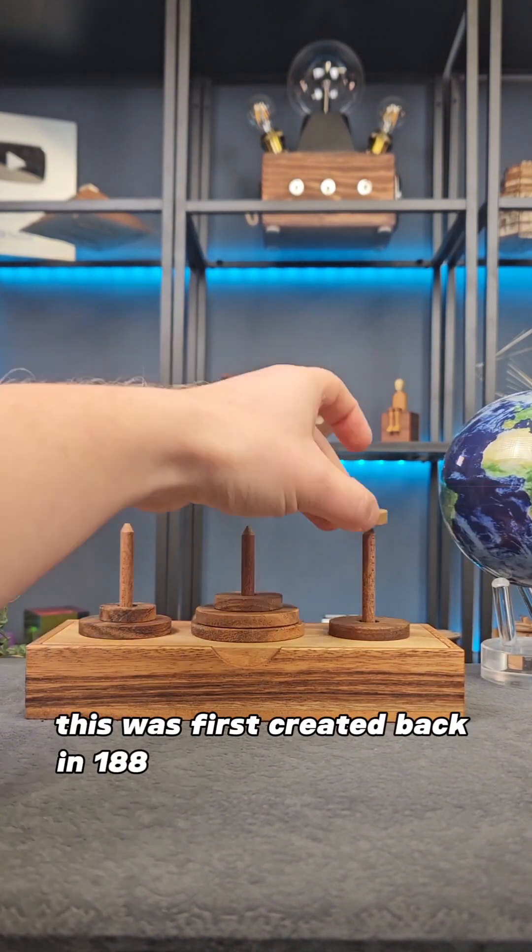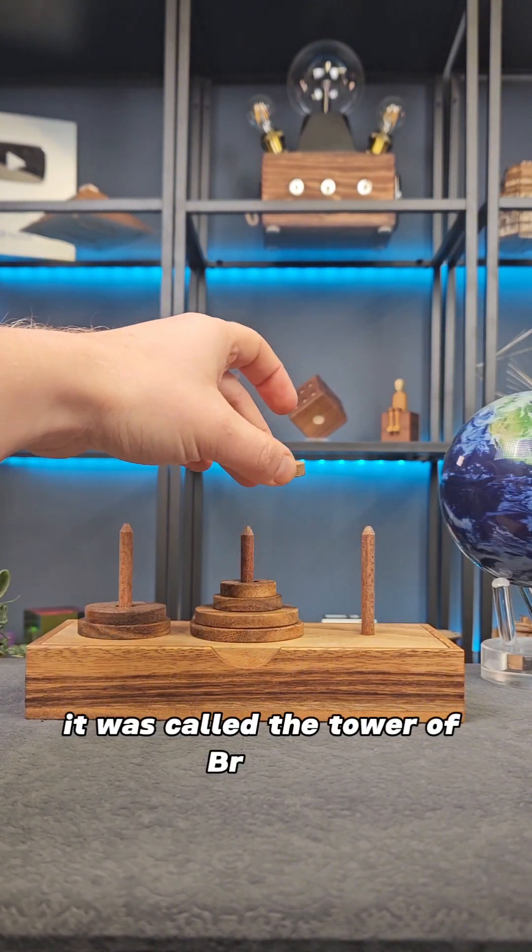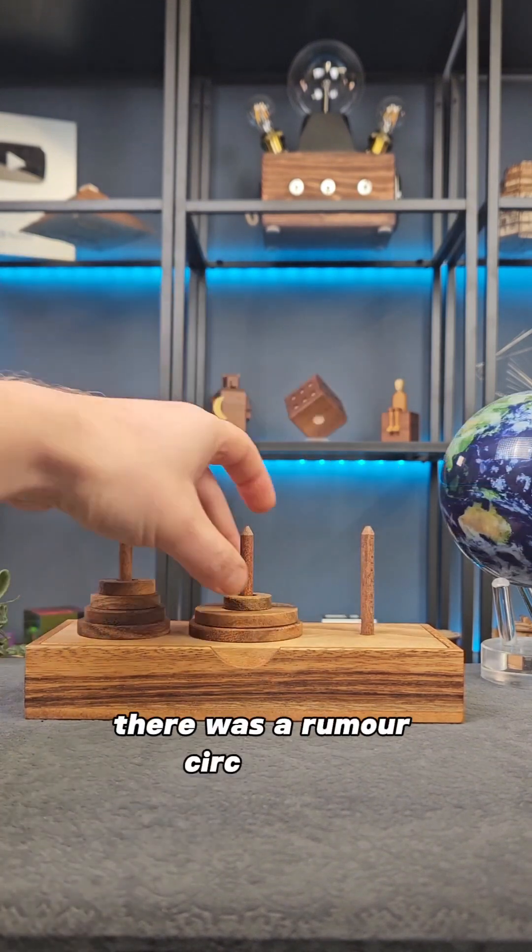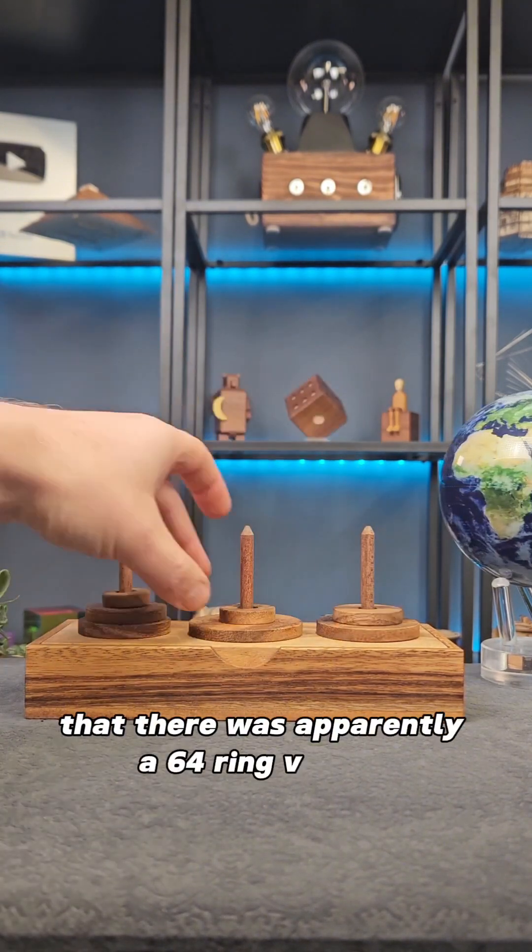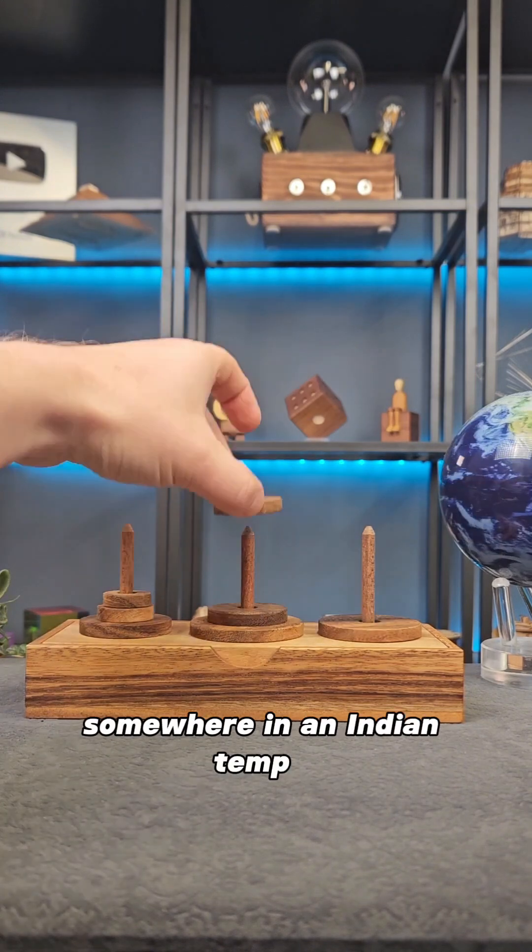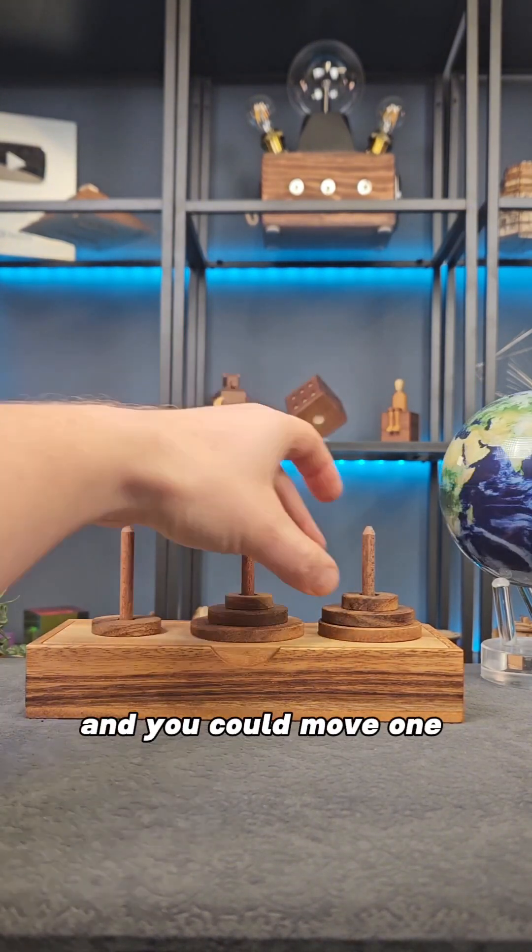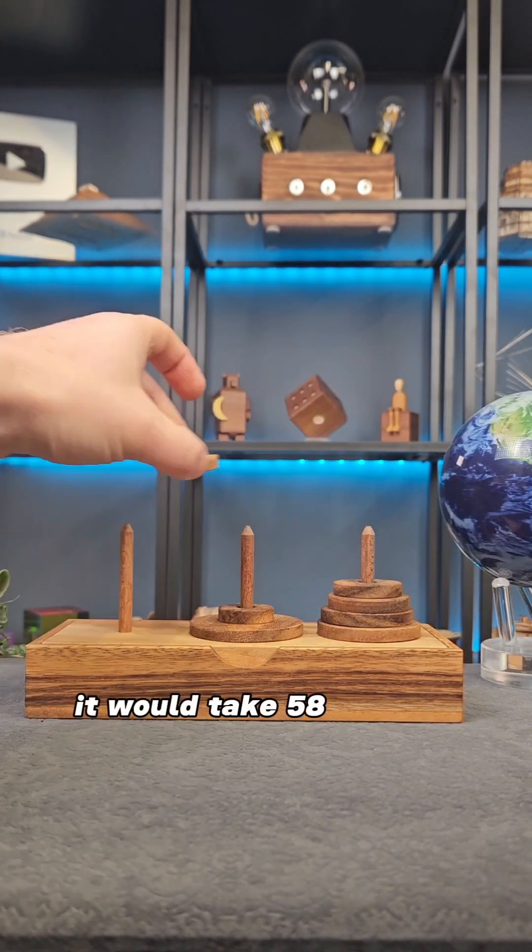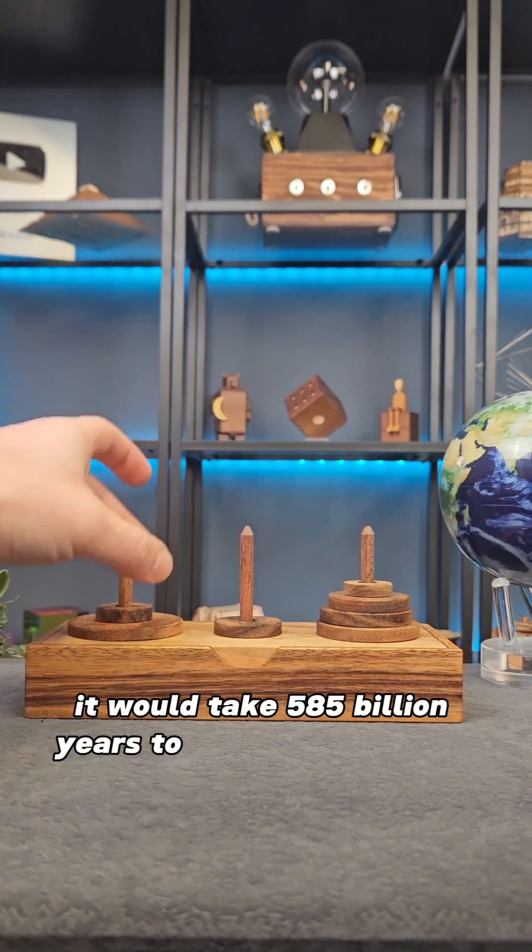This was first created in 1883 by a mathematician. It was called the Tower of Brahma, and at the time there was a rumor that there was a 64-ring version somewhere in an Indian temple. If that were true and you could move one disc per second, it would take 585 billion years to complete.